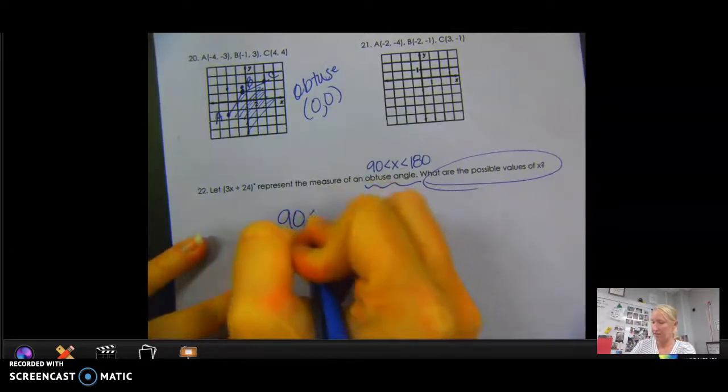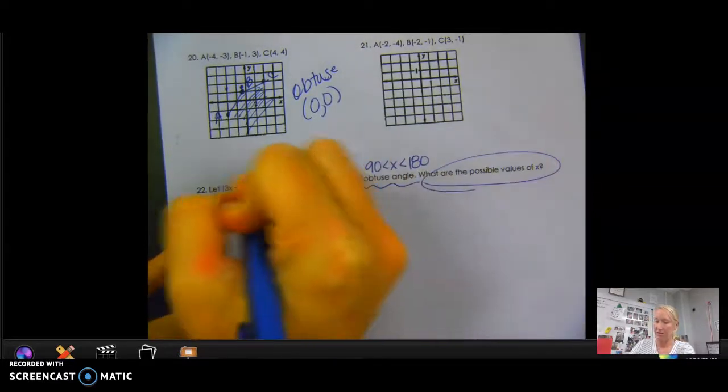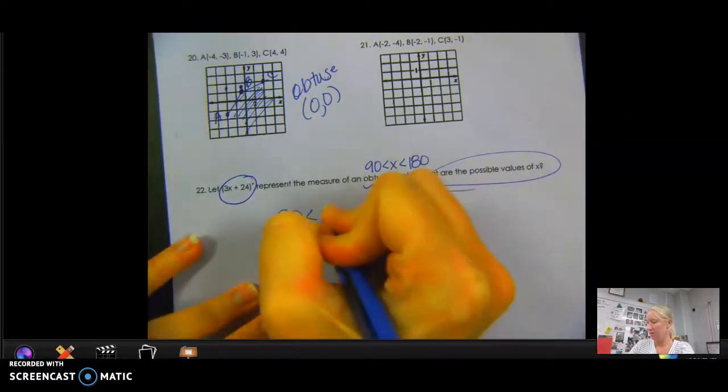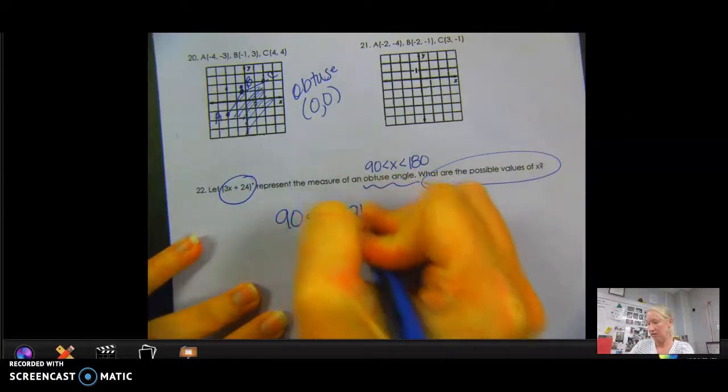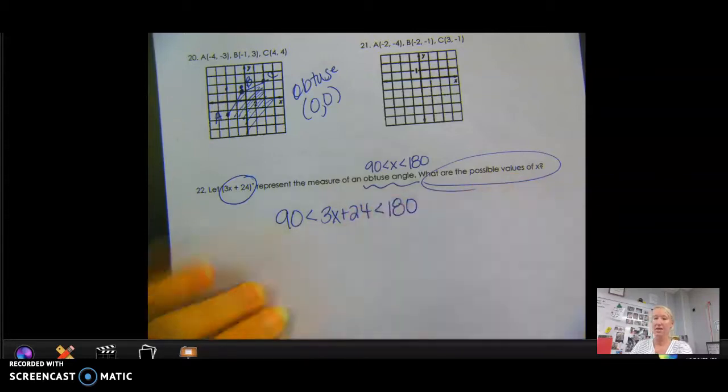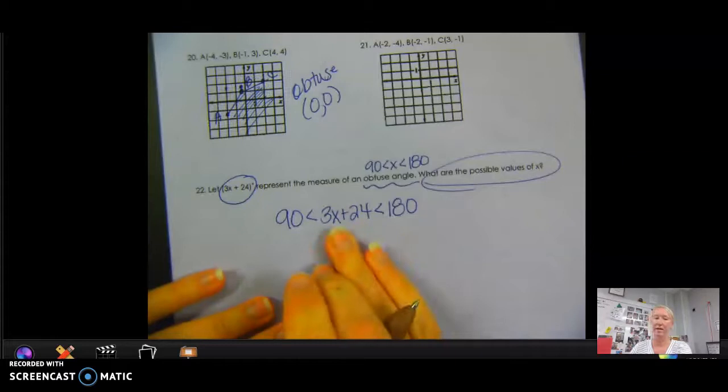So you're just going to plug it into that inequality. You're going to say 90 degrees is less than. We're going to take out x and put in the actual angle. 3x plus 24. And we're going to say it has to be less than 180 also. And then you're going to start solving this inequality. So to start solving the inequality, we want x left in the middle. So we want to get everything away from x.